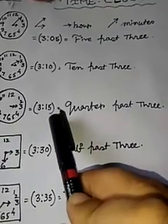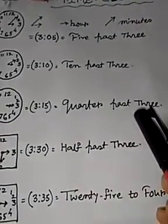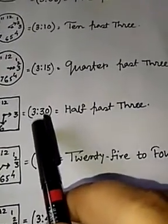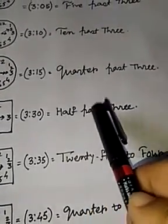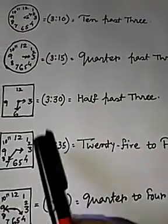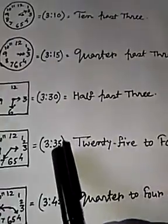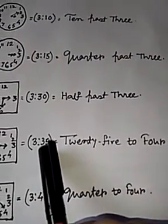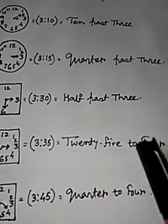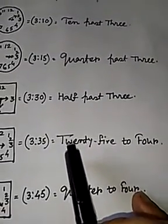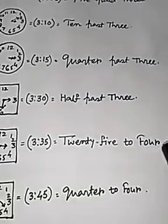3:15 means not 15 past 3, we say quarter past 3. 3:30 means half past 3. 3:35 means when you cross the 30, you have to calculate how many minutes are left for the next one, that is the 4. So 25 left, so we say like this: 25 to 4.